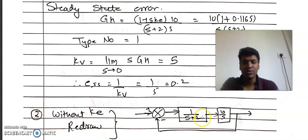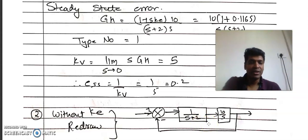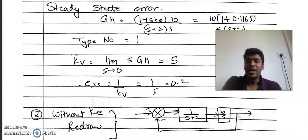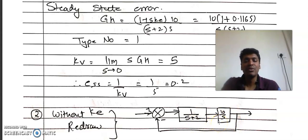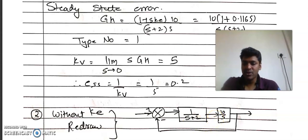Same procedure applies: find the closed loop transfer function, compare the denominator with the standard form s² + 2ζωn·s + ωn² to get all time domain specifications, then find G·H (which will again be Type 1), find Kv, and determine the steady state error. This is your homework. Thank you.